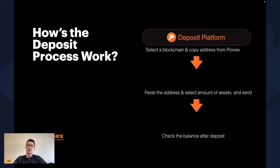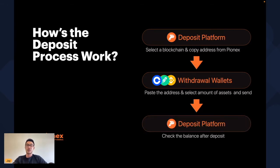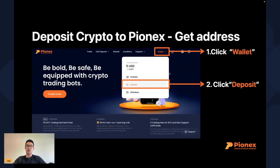Once you have those two things, we can move on. Here's a quick review of how the deposit process works in three steps: First, select the blockchain and copy the address from Pinex. Second, go to the app you want to withdraw from — Coinbase, Robinhood, or Binance — paste the address, select the asset, and press send. Third, go back to Pinex and check your balance after the deposit.